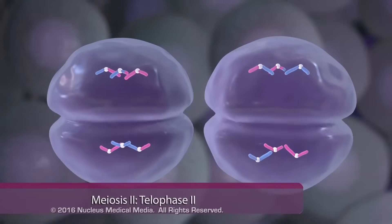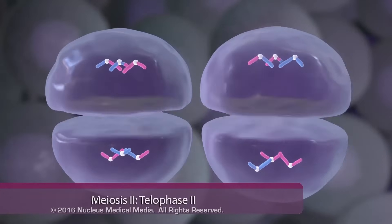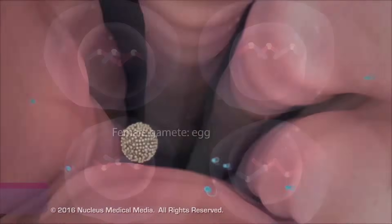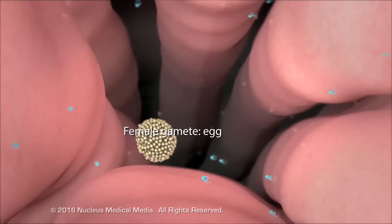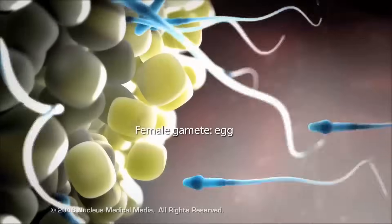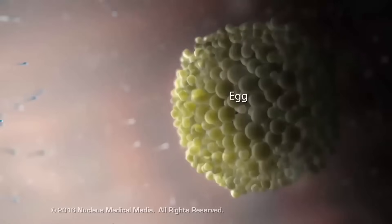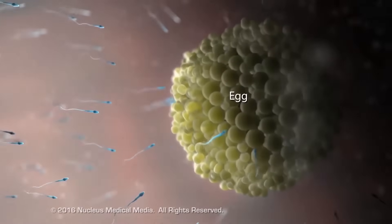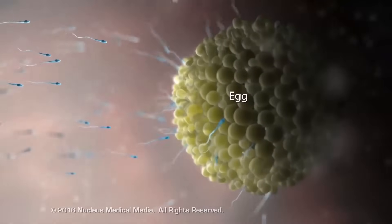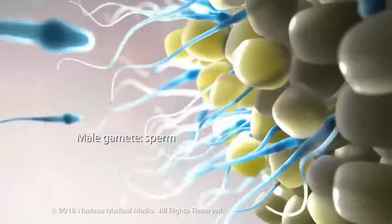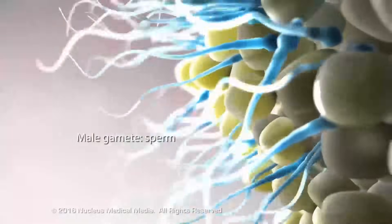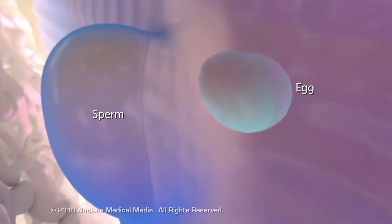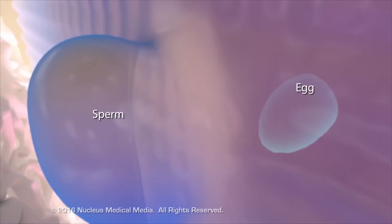In telophase II, the two cells divide, resulting in four haploid daughter cells. Once meiosis is complete, the male and female gametes each contain a unique set of 23 single-stranded chromosomes, ultimately resulting in the genetic variability of humans. Once these gametes meet, they become a single fertilized cell called a zygote.